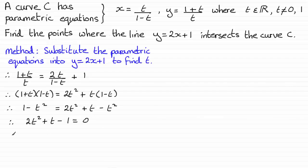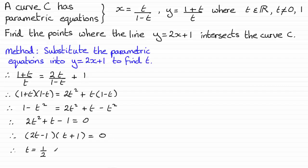I can now factorize this quadratic. That gives two brackets: 2t minus 1 and t plus 1 equals 0. Setting each factor to zero: if 2t minus 1 equals 0, then t equals a half. And if t plus 1 equals 0, then t equals minus 1.